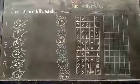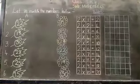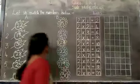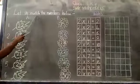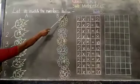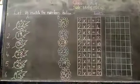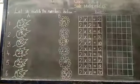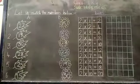Match the following. Let us map the numbers below. Column A. Column B. See now children.